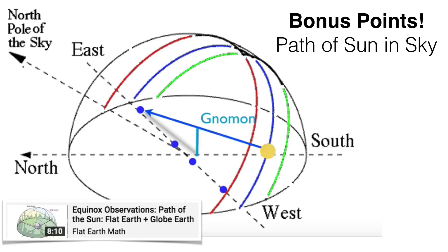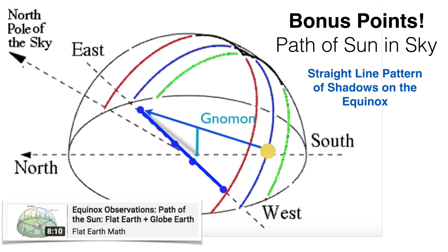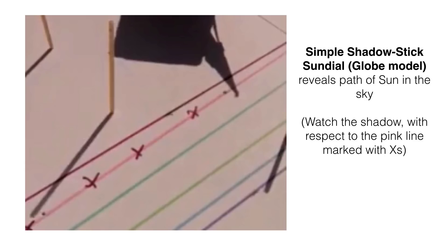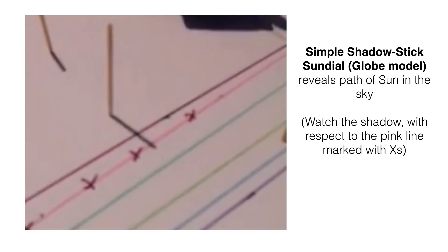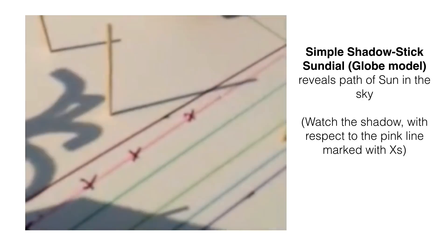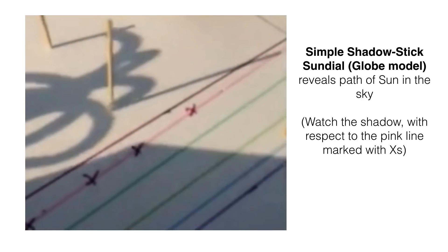One of my favorite things is to talk about the path of the sun in the sky. I don't think enough people use sundials — I'm a big fan of simple shadow-stick sundials. On the equinox in the globe model, the pattern of shadows should be a straight line. Looking at one toothpick and following that pink line with the little red X's, it's a little shaky but the pattern should be clear — it is traveling pretty close to a straight line.